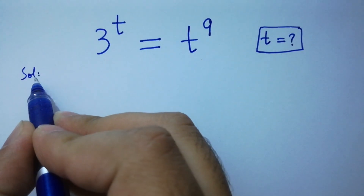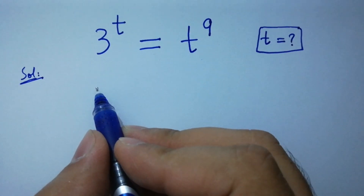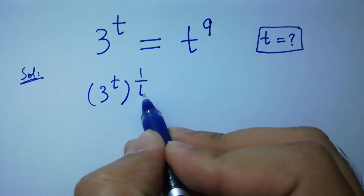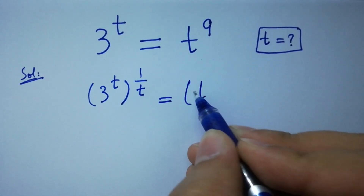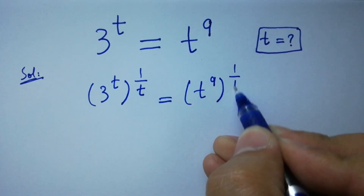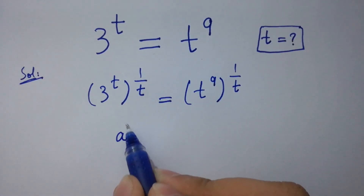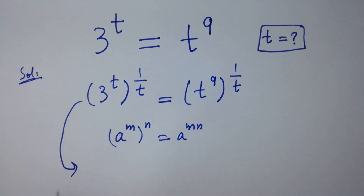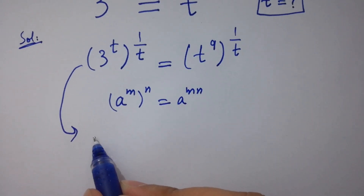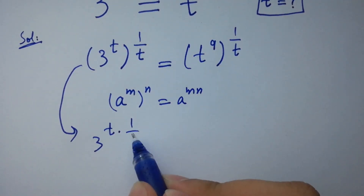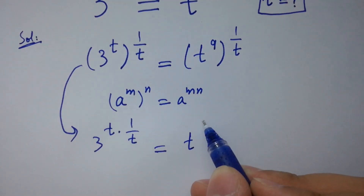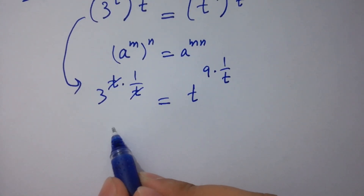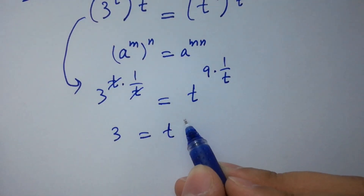To solve this, take power 1 over t on both sides. So 3 to the power t, raised to the power 1 over t, equals t to the power 9, raised to the power 1 over t. Using the rule a^n raised to power m equals a^(mn), we get 3 to the power t times 1 over t, equals t to the power 9 times 1 over t. The t and t cancel, giving us 3 equals t to the power 9 over t.